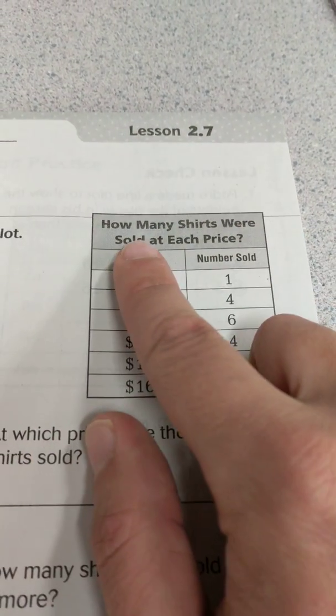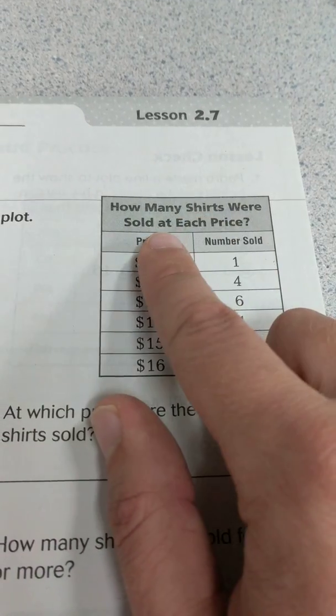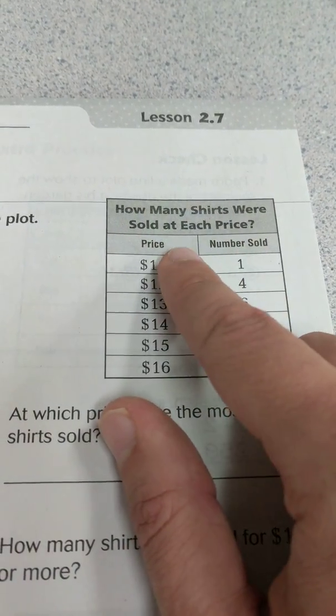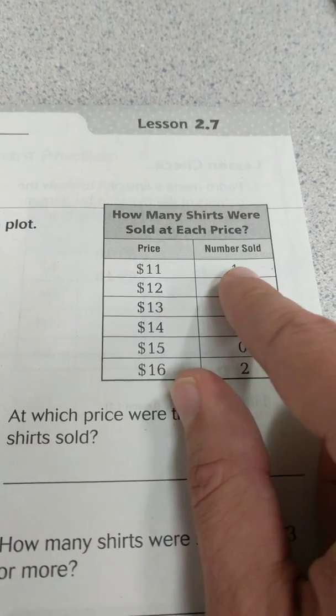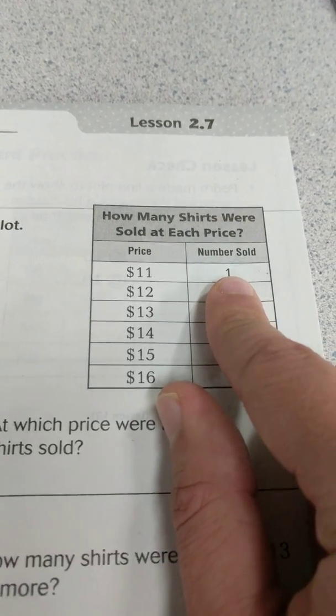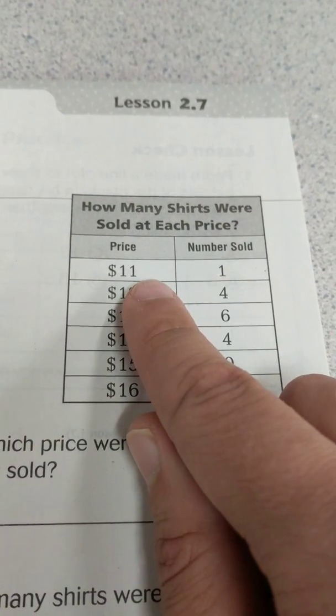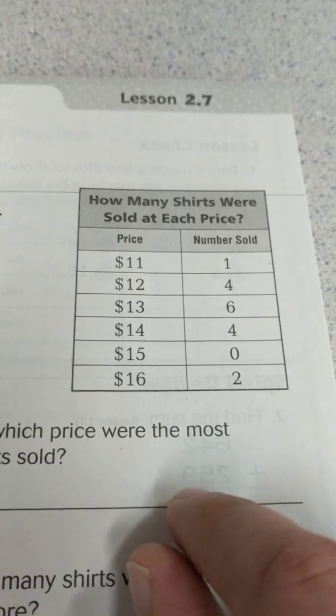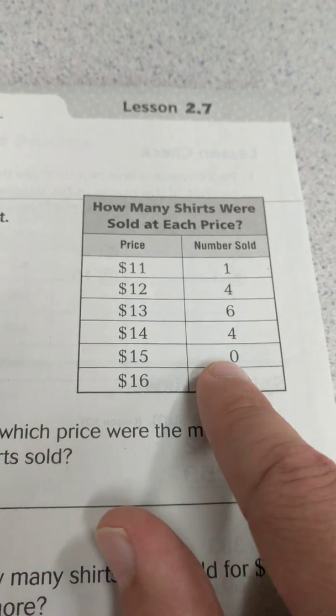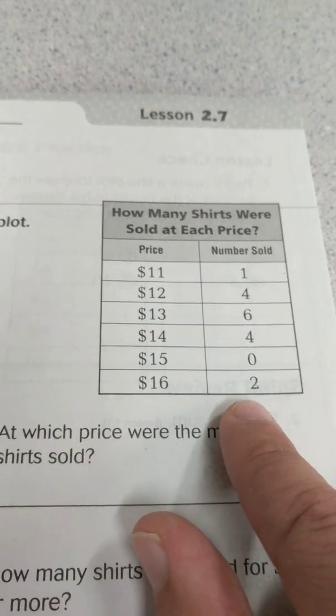Here's the table over here and it tells us how many shirts were sold at each price. So you have prices here and then how many sold for each price. For instance, there are shirts that are $11, only one of those sold. There are shirts are $15, zero of those sold. $16, two of those sold.